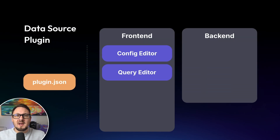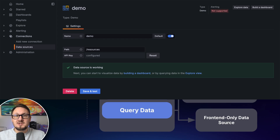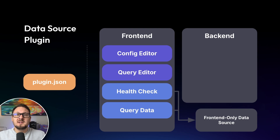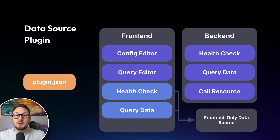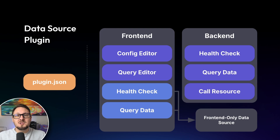There are both front-end and back-end data source plugins, and the distinction lies in the way that the health check and query data functionality is implemented. For front-end data sources, both the health check and query data components live on the front-end and are written using TypeScript. The health check verifies that the connection to the data source is working, and it's invoked when the user presses the save and test button when configuring the data source. The query data function actually queries the data source using the user's query and is responsible for returning the appropriate data frames, which can then be used by the panel itself. For back-end data sources, the health check and query data components instead run on the server side and are written in Go. Back-end data sources can also expose resource endpoints, allowing you to run bespoke server-side logic and return results to the front-end via HTTP requests.